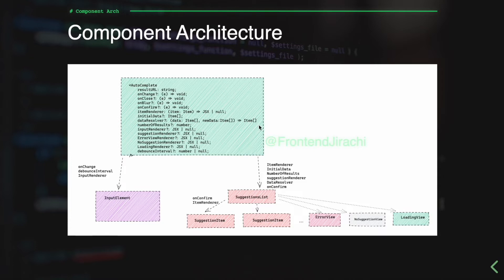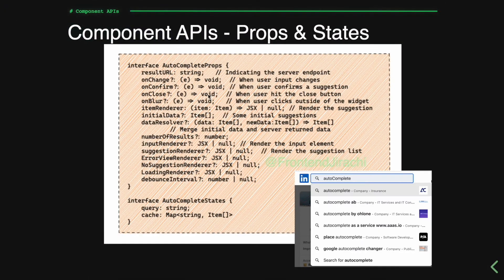Let's take a closer look at the auto-complete component's properties. The resultURL indicates what endpoint we want to load data from. Below there are different hooks: onChange, onConfirm, onClose, and onBlur. These hooks handle different events — for example, onChange fires when the user input changes, onConfirm when the user confirms a suggestion, onClose when the user clicks the close button inside the input element, and onBlur when the user clicks outside of the widget.